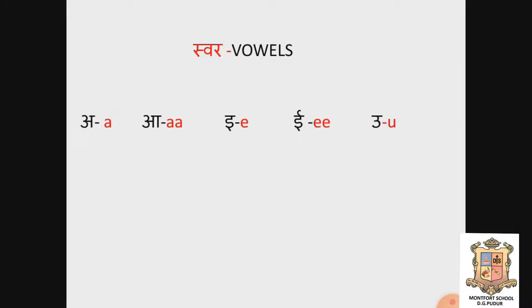There are 13 vowels and 33 consonant letters in Hindi. We will see them one by one, first the vowels.